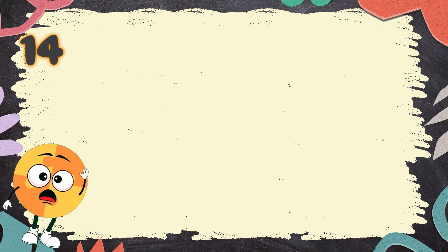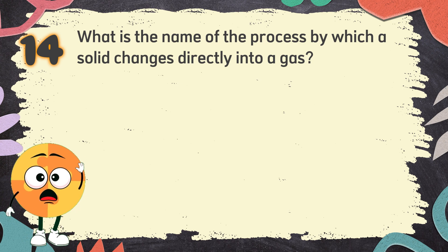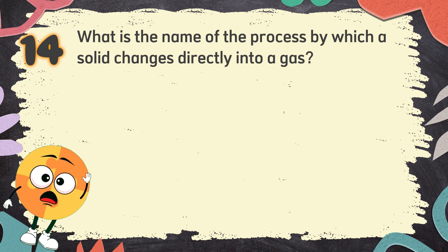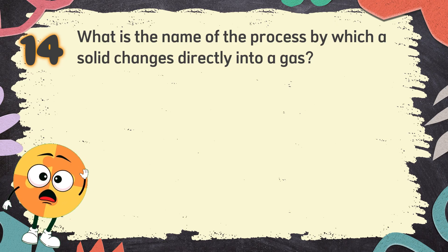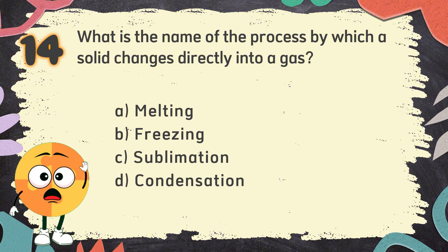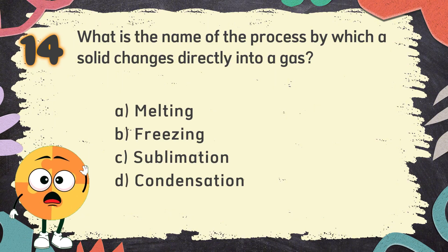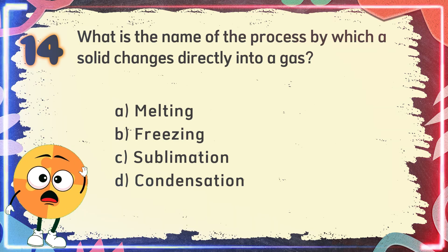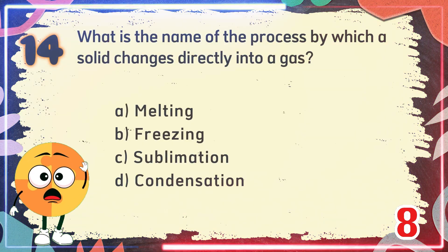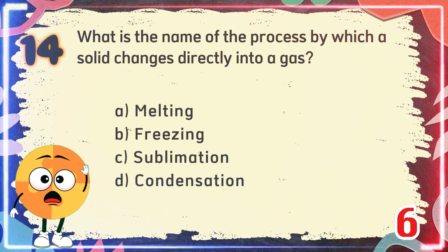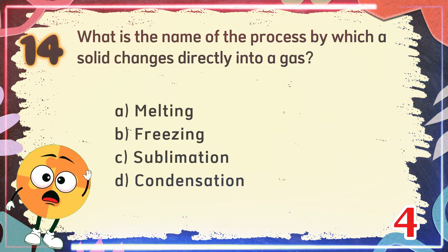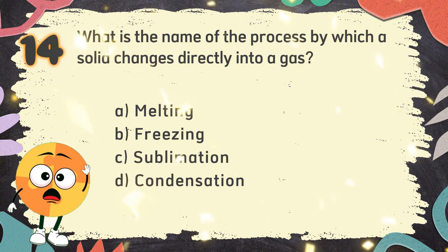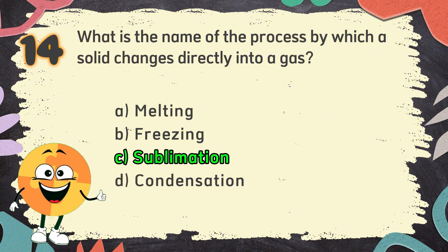Number 14. What is the name of the process by which a solid changes directly into a gas? The choices are A. Melting, B. Freezing, C. Sublimation, D. Condensation. The correct answer is C. Sublimation.